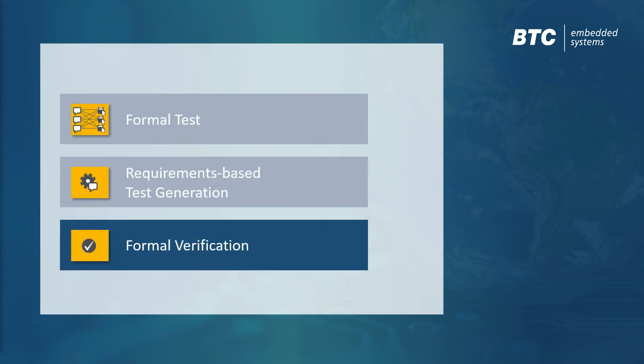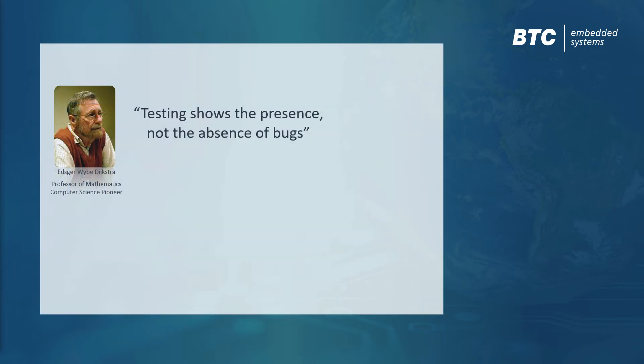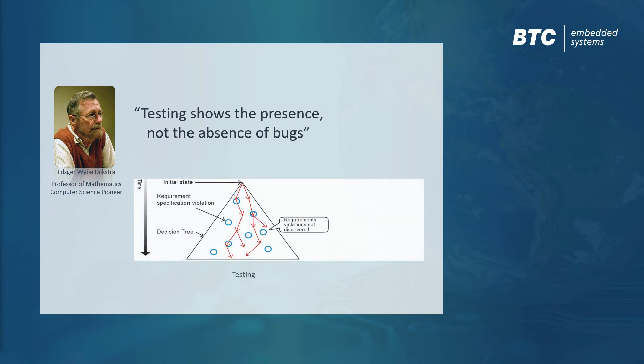Edsger Dijkstra was quoted as saying, testing can be used to show the presence of bugs, but never to show their absence. So how can we guarantee that a safety requirement can never be violated? This question can't be answered by conventional testing, because a test case only represents one run from an almost infinite number of possible runs through the states of a system.